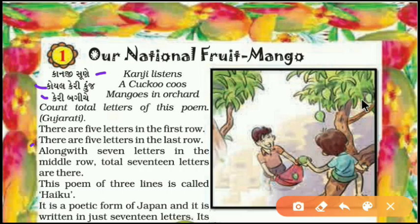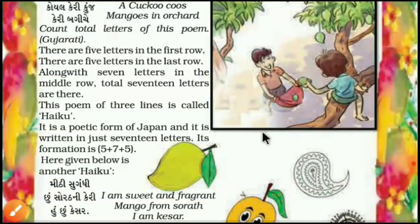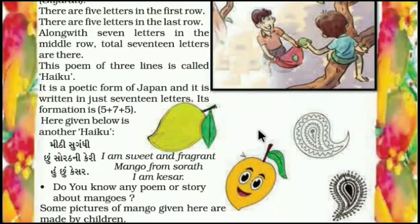This poem of three lines is called Haiku. It is a poetic form of Japan and it is written in just 17 letters. Its formation is five plus seven plus five.